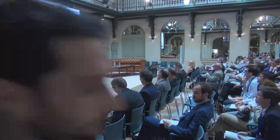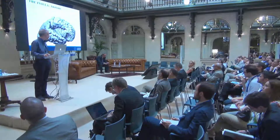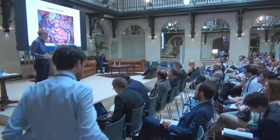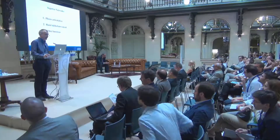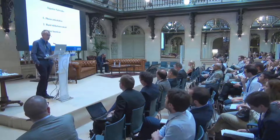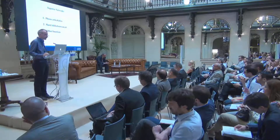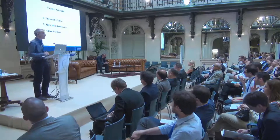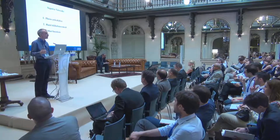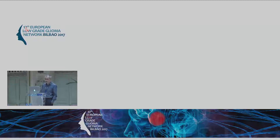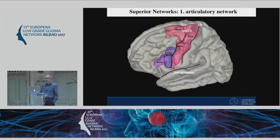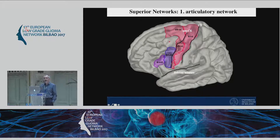Starting with the superior network, and specifically, what is the activity of the superior network? You have phono articulation, hand skill movement, and also other functions. Starting with the first one, which is quite peculiar for the human being, which is the articulation network — you can see that you have immediately a couple of structures that are interplaying all together.